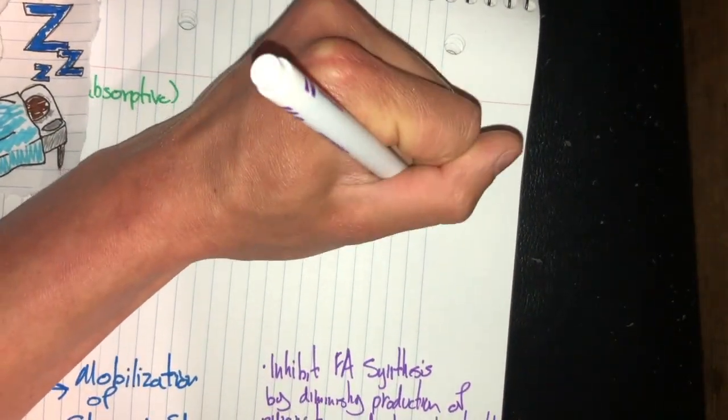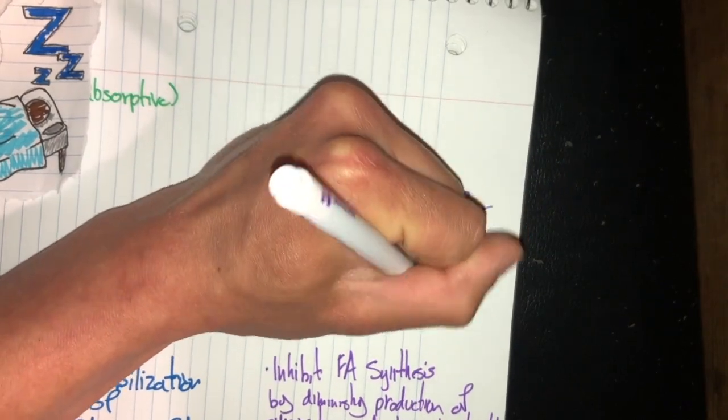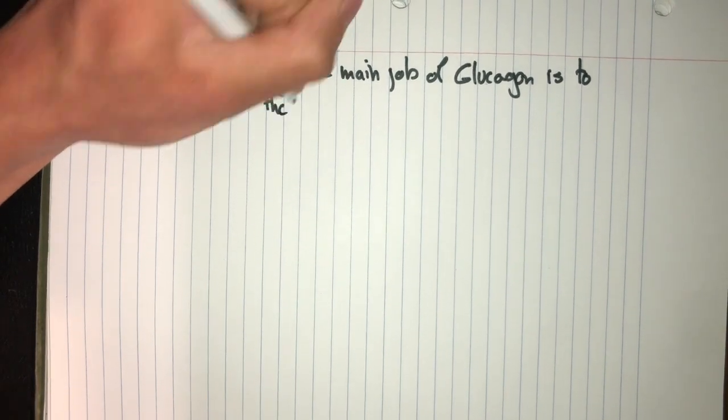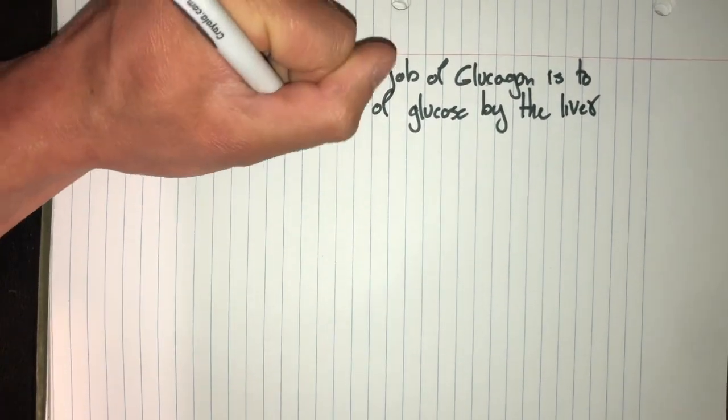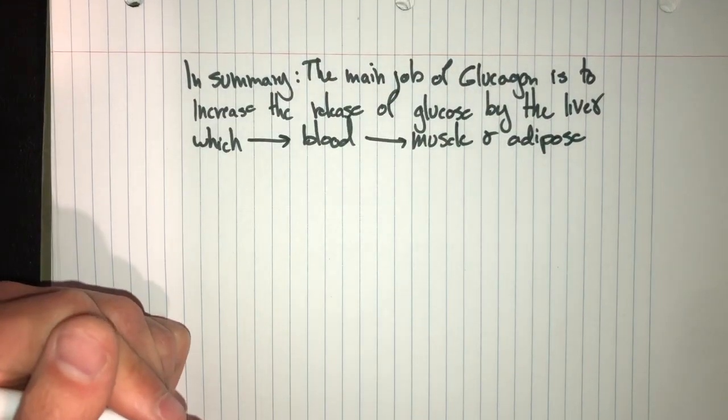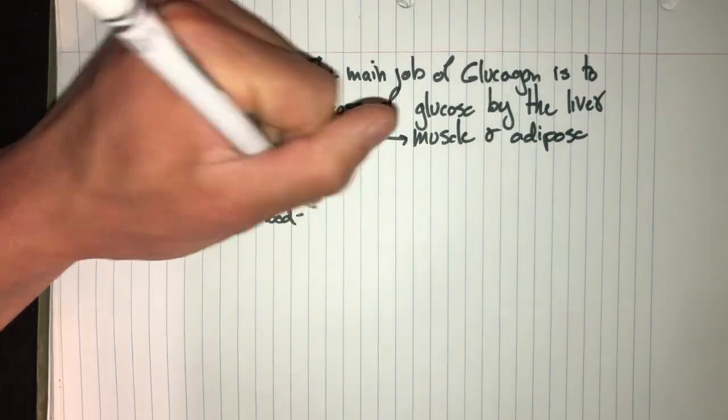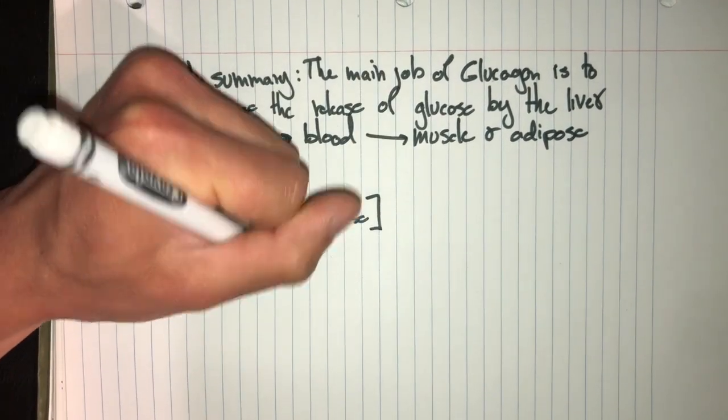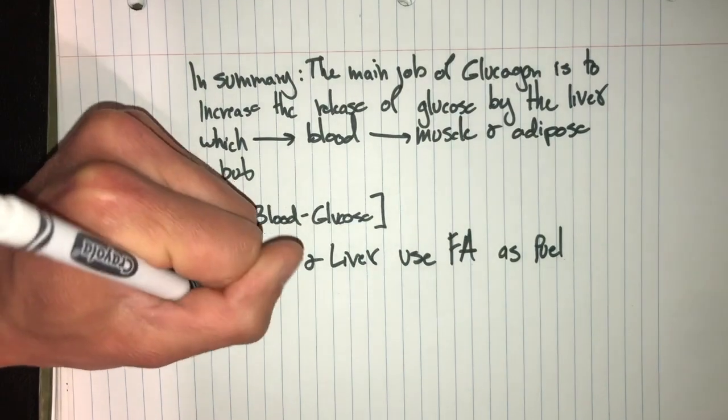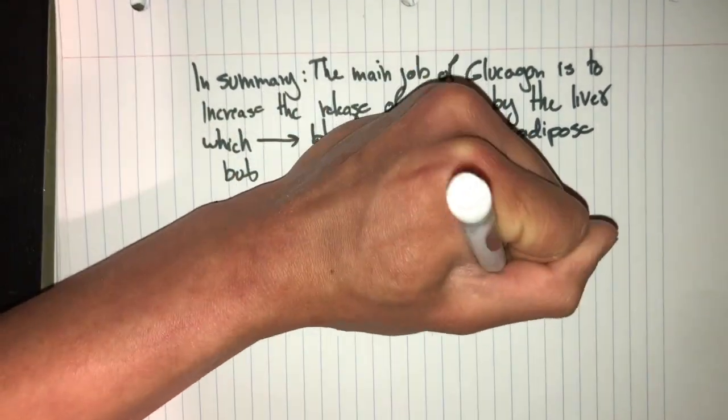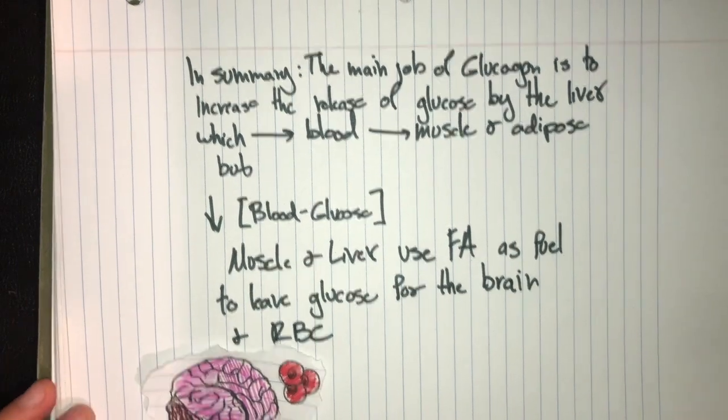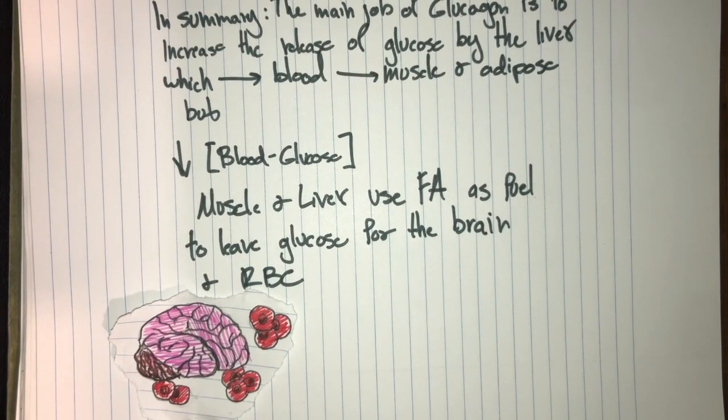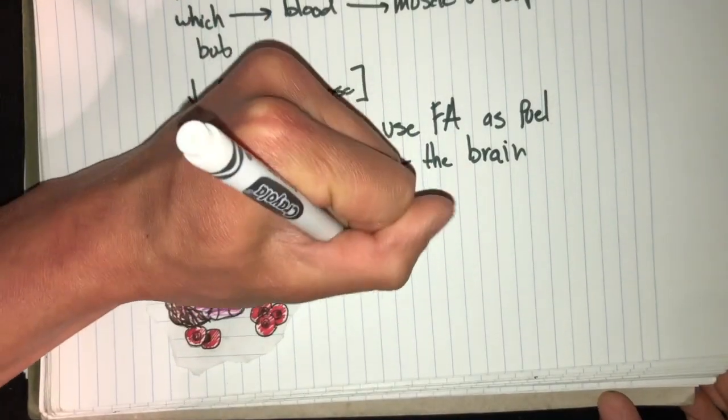Nice guys, I apologize for running off the page. All right, so in summary, the main job of glucagon is to increase the release of glucose by the liver, which then enters the blood, which then enters the muscle and adipose tissue. But with a decrease in blood glucose concentration, the muscle and liver both have to use fatty acids as fuel to leave glucose for the brain and your blood cells. This concentration needs to be kept up to about 4.4 millimolars.